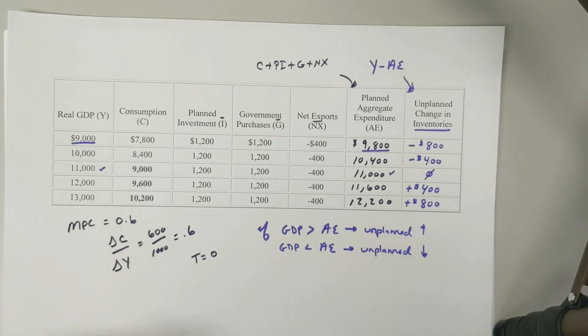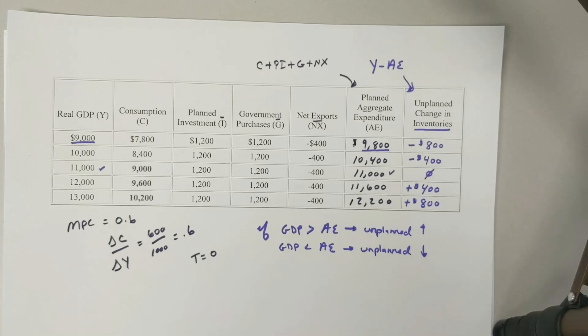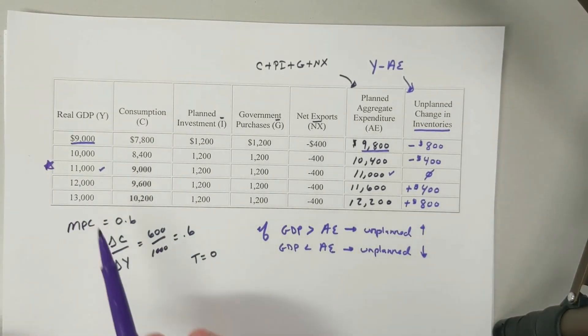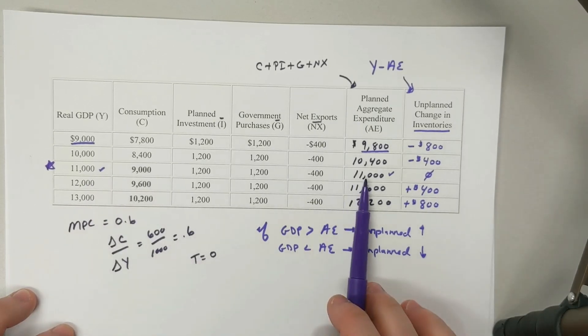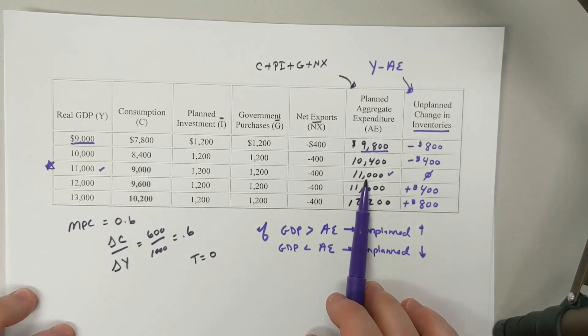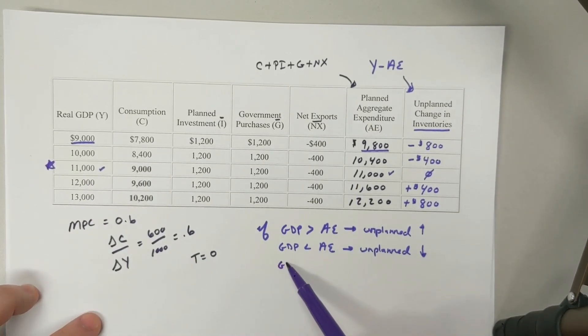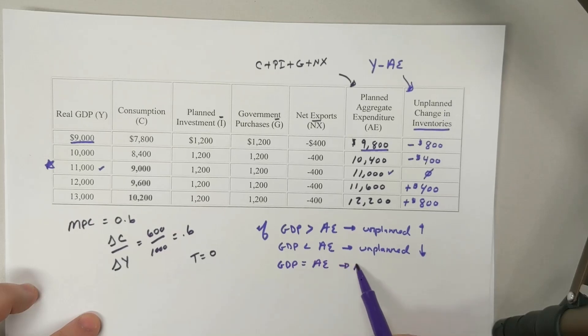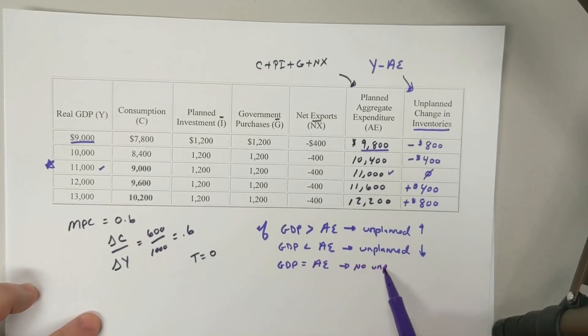Last but not least, if you're given a table like this, you can figure out where the equilibrium level of real GDP is. And that would be 11,000, because 11,000 creates us to have 11,000 in aggregate expenditures. And so when GDP is equal to aggregate expenditure, we know that's the macroeconomic equilibrium, and there's no unplanned change.